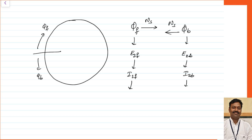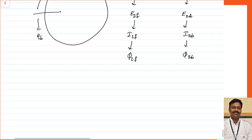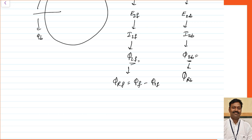Because of the rotor currents, fluxes phi_2f (forward) and phi_2b (backward) are produced by the rotor. These two fluxes are in opposite directions and will always try to oppose their cause. The cause is the main field flux: phi_f is responsible for phi_2f and phi_b is responsible for phi_2b. So the resultant forward flux in the air gap equals phi_f minus phi_2f, and the resultant backward flux equals phi_b minus phi_2b. The forward resultant produces forward torque and the backward resultant produces backward torque.